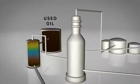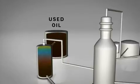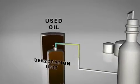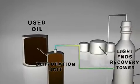Vaporized light oil, water and ethylene glycol move from the dehydration unit to the light ends recovery tower where they are further separated.